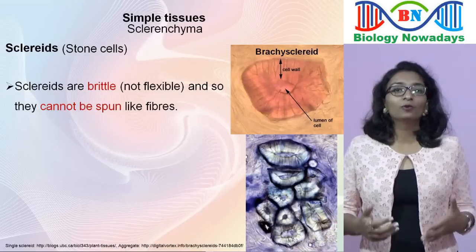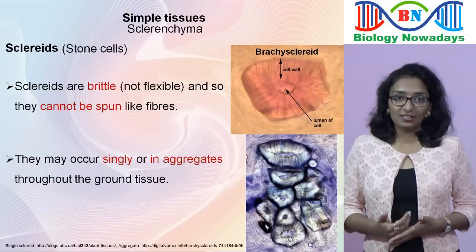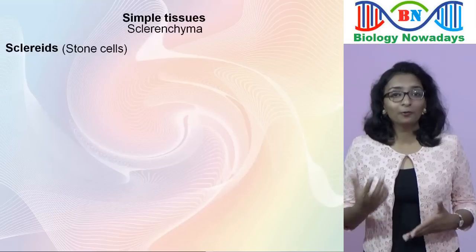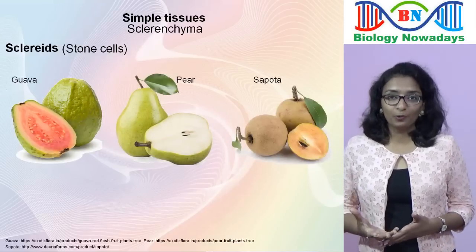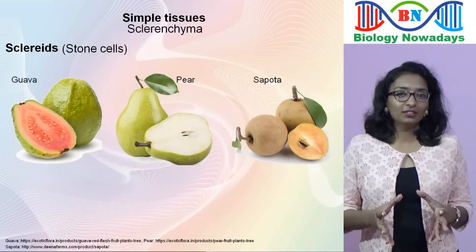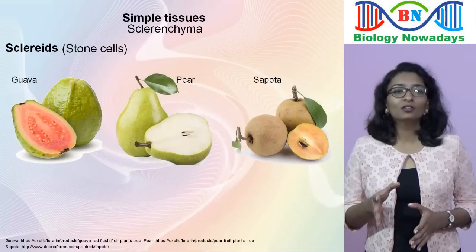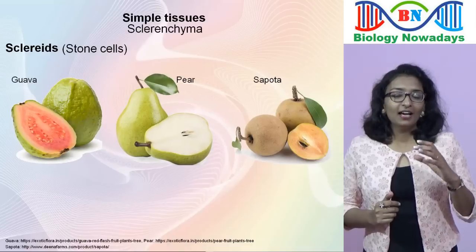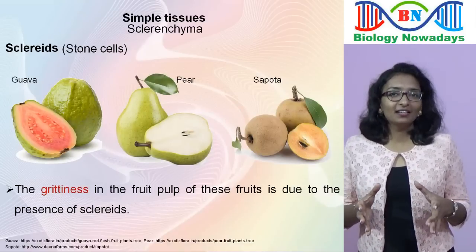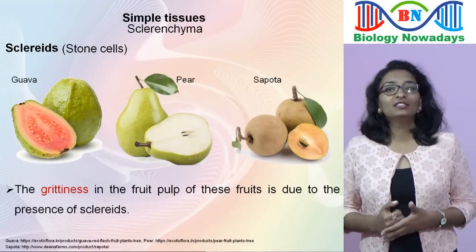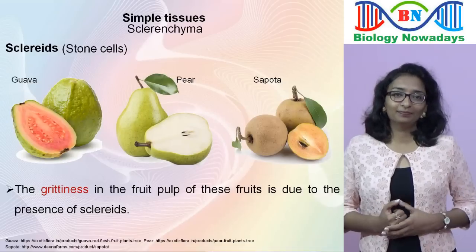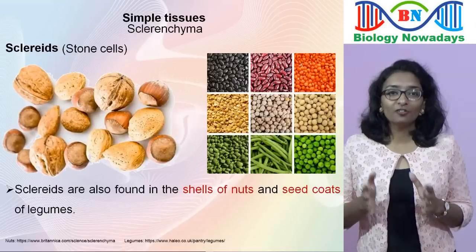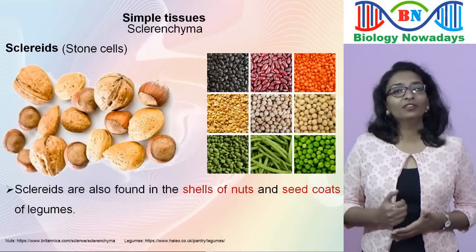Sclereids may occur singly or in aggregates throughout the ground tissue. If you have eaten fruits like guava, pear or sapota, you might have noted that the fruit pulp is gritty — this grittiness is due to the presence of sclereids. Sclereids are also found in the shells of nuts and seed coats of legumes.